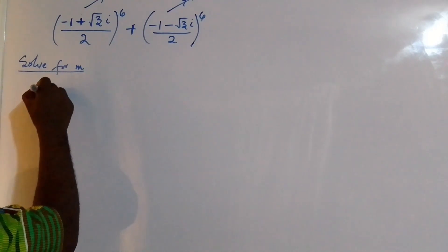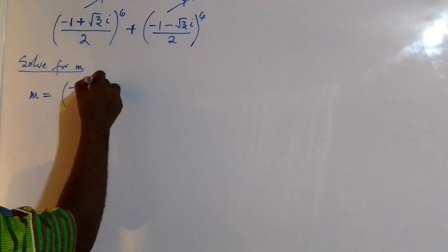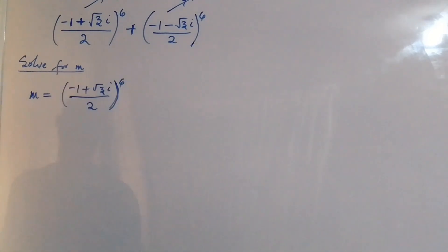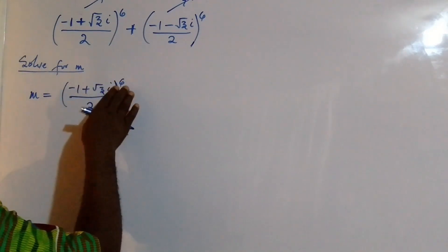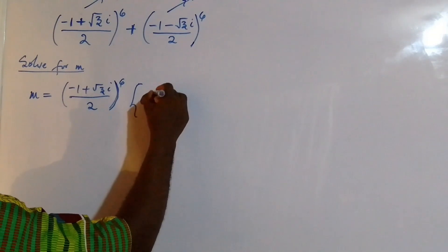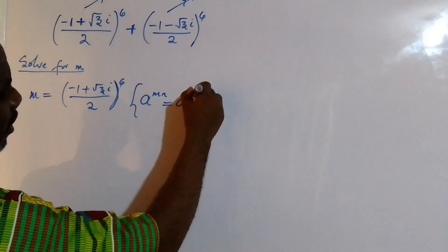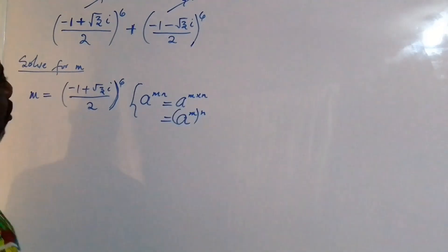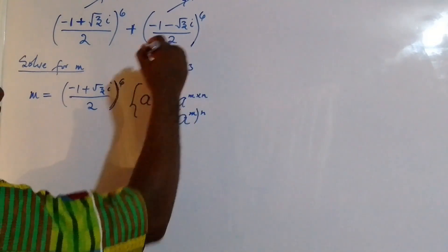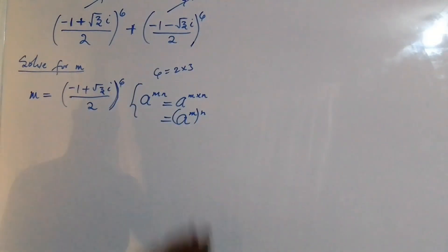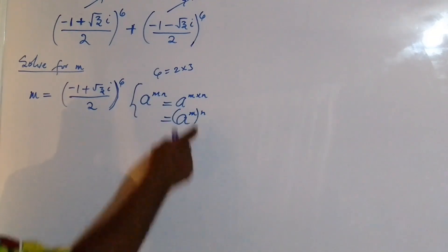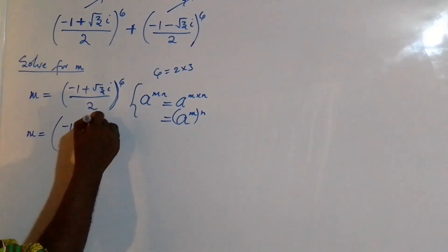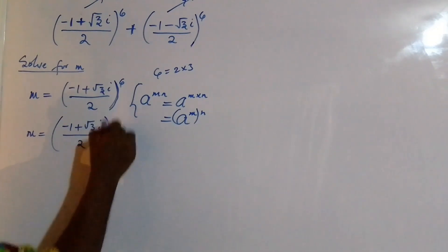So m equals (-1 + √3i)/2 to the power of 6. I'm going to rewrite this using the rule that a^(mn) = a^m · a^n, which is also the same as (a^m)^n. Since 6 = 2 × 3, I take 2 as m and 3 as n. So I rewrite this as [(-1 + √3i)/2]² all to the power of 3.